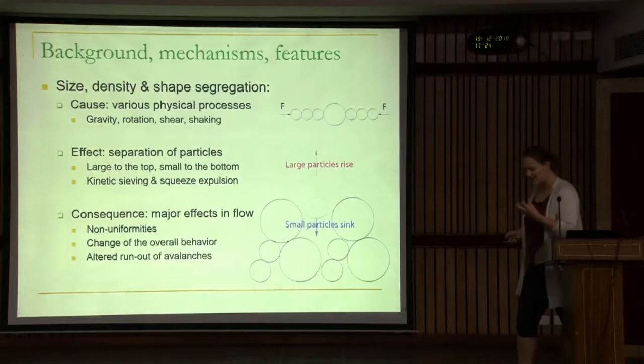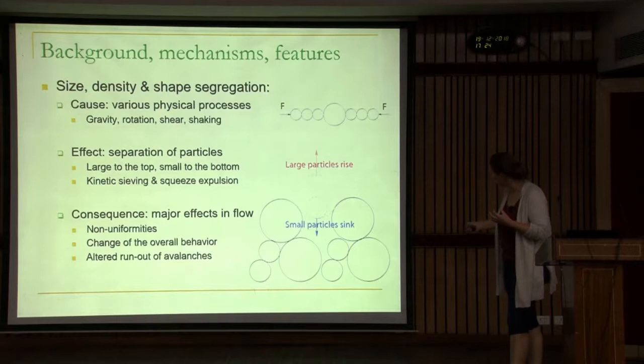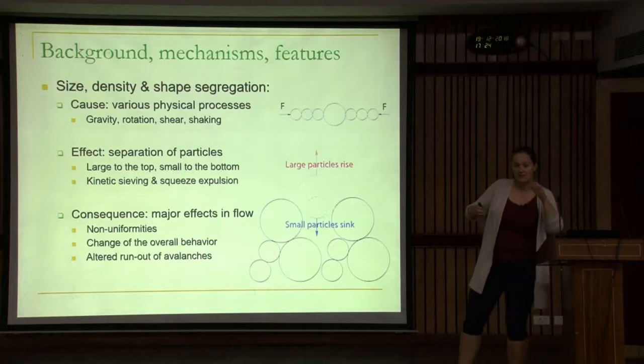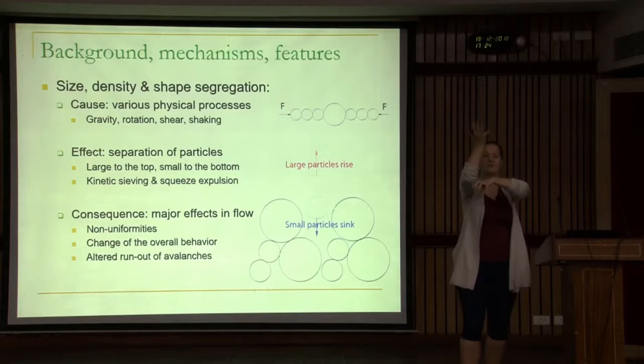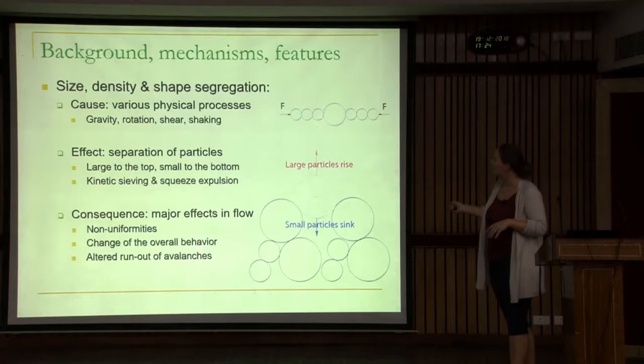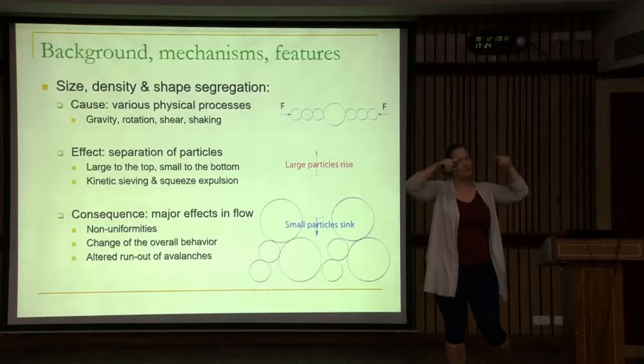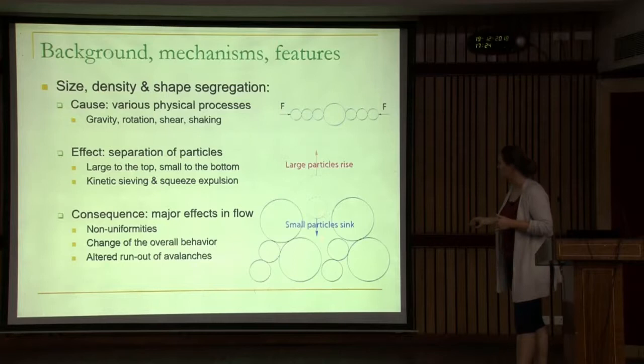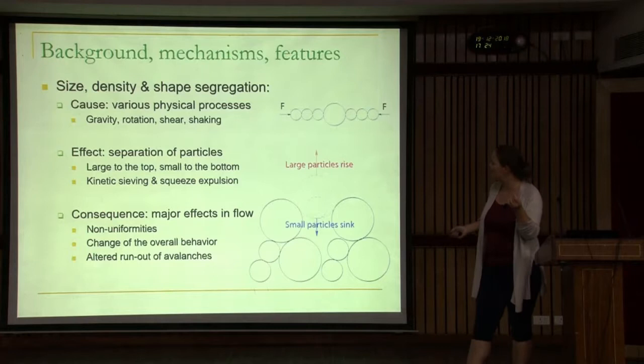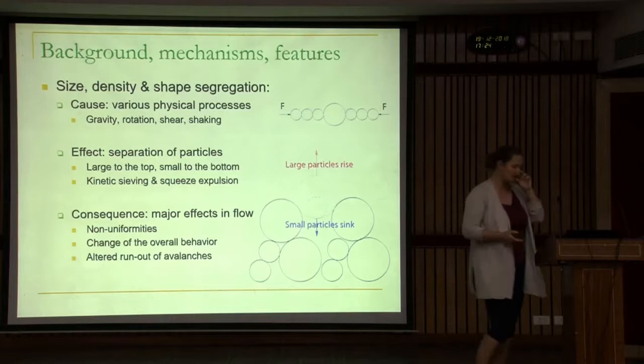The basis of segregation is that if there's a gap, there's a bigger chance a small particle falls into it, while the large particle just doesn't fit. There's a tendency for small particles to percolate down, and because of mass conservation, large particles rise up. This process is called kinetic sieving. Another process is squeeze-expulsion, where forces are applied to a force chain or array of particles, independent of particle size. The consequence is big: flows change their overall behavior, and you can really change the run-out of an avalanche.